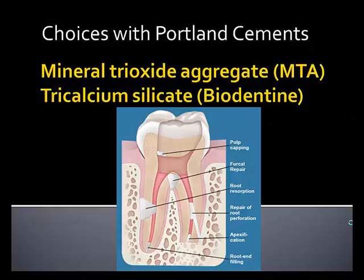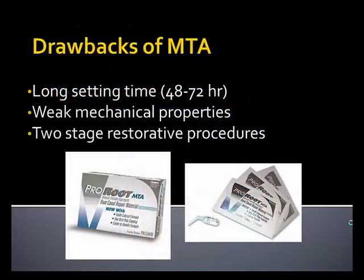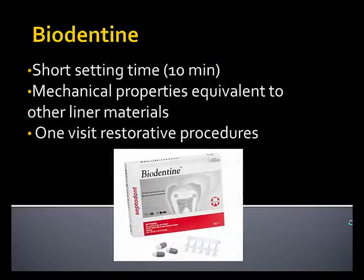The choices with our Portland cements are MTA and Biodentin. There is a difference in the physical properties of these materials. MTA has a long setting time and weak mechanical properties, usually requiring a two-stage restorative procedure — place the MTA, then two to three days later go back into the tooth and do your definitive restoration. That's why when Biodentin came onto the market, with a short setting time of about 10 minutes and mechanical properties equivalent to resin-modified glass ionomer liners, it allowed us to do one-visit restorative procedures.